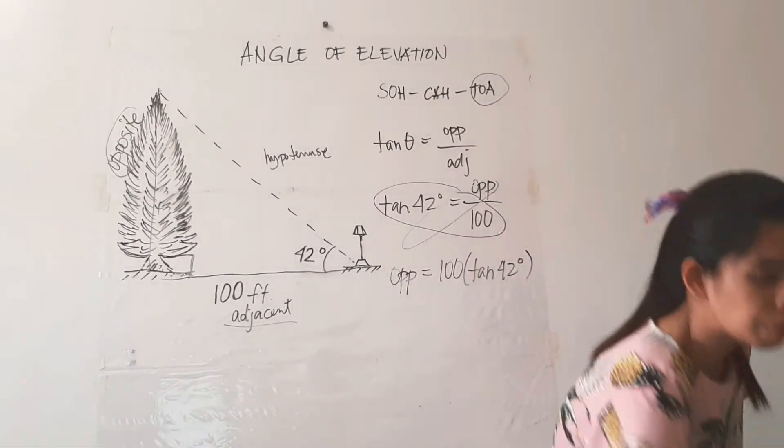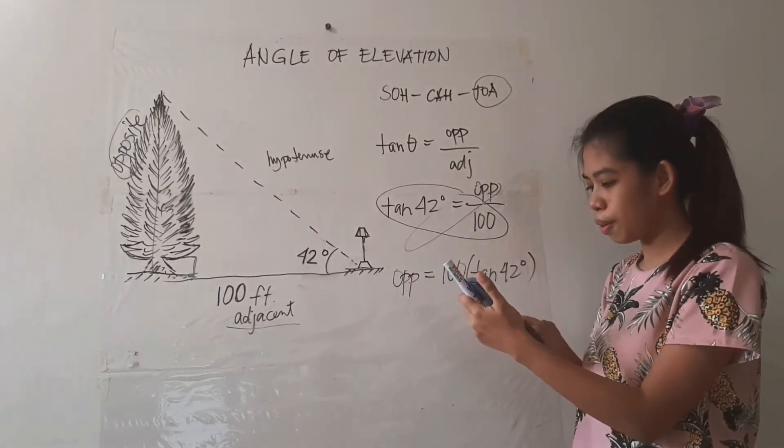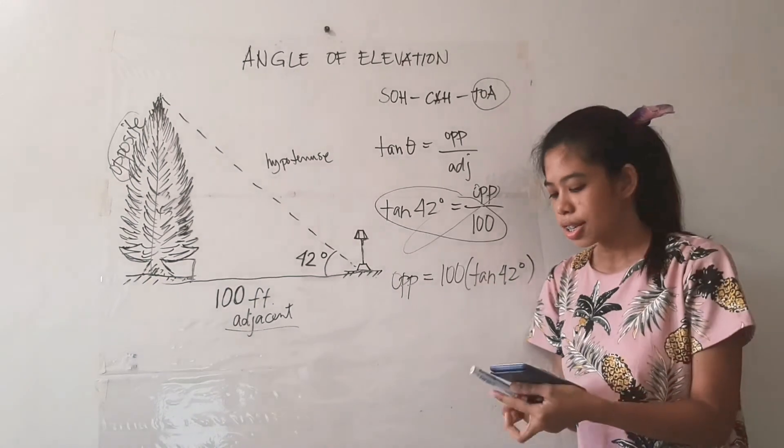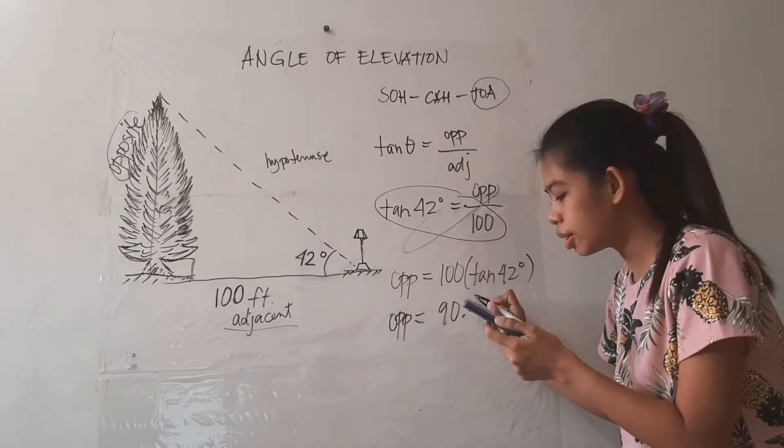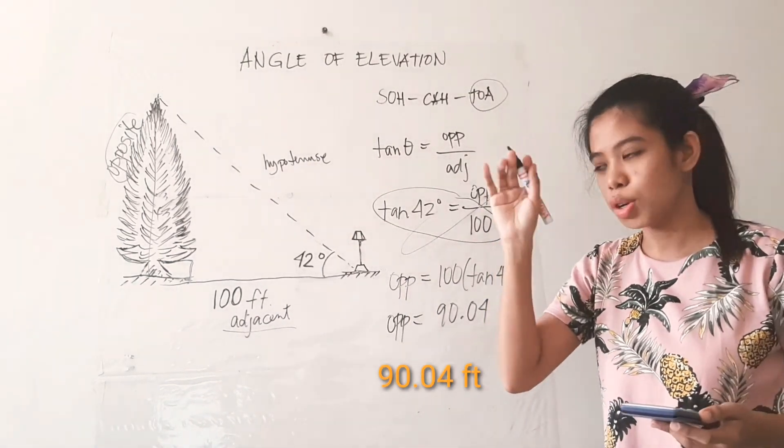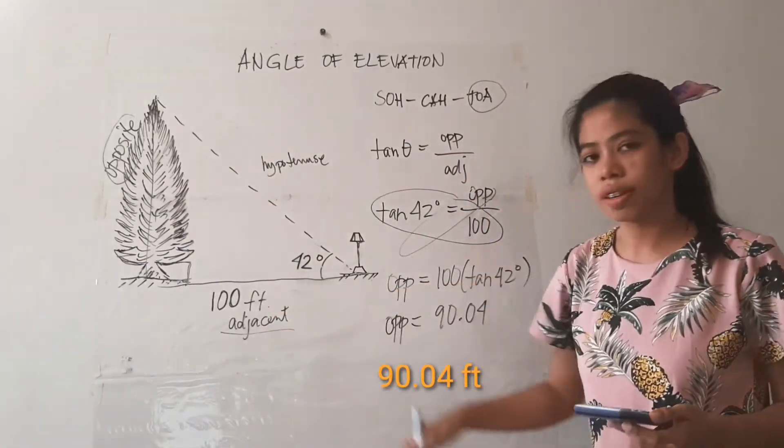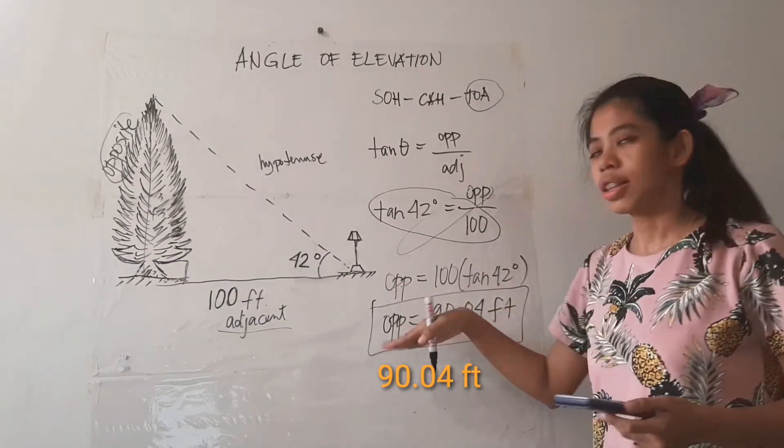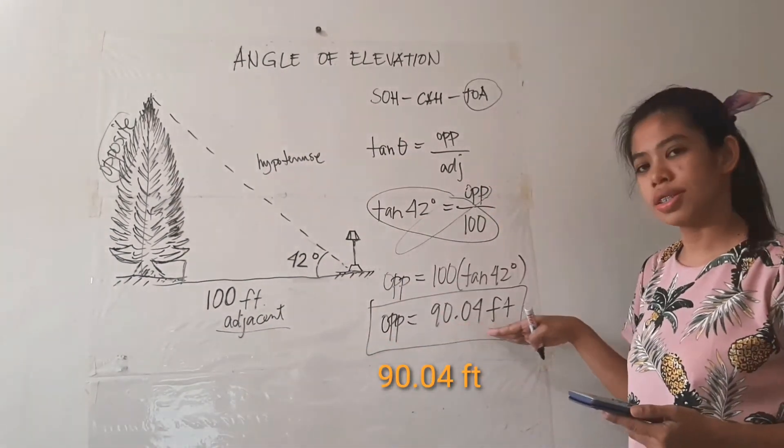So let's find out using your calculators. So that means 100 times tangent 42 degrees. You are going to get this. I hope you got the same answer. So that's the measure of the opposite side is 90.04. Do we need to use degree symbol? No. Or the degree unit? No. Because we are not talking about an angle. We are talking about the height. So since you were given here feet, you may also use feet here. So the unit measure is the opposite side, or the height of the tree measures 90.04 feet.